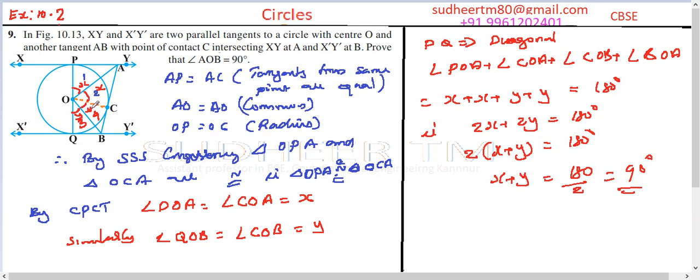Now, X plus Y is nothing but angle AOB. Therefore, angle AOB is equal to 90 degrees, and hence we have proved it.